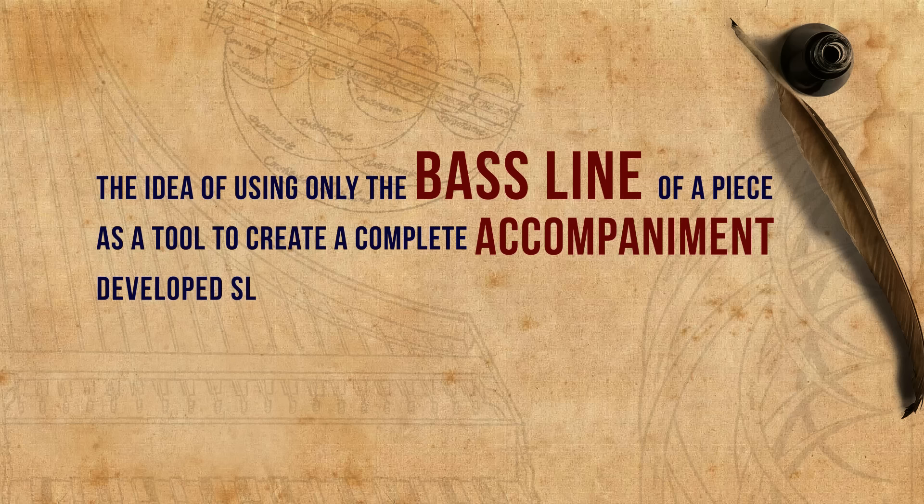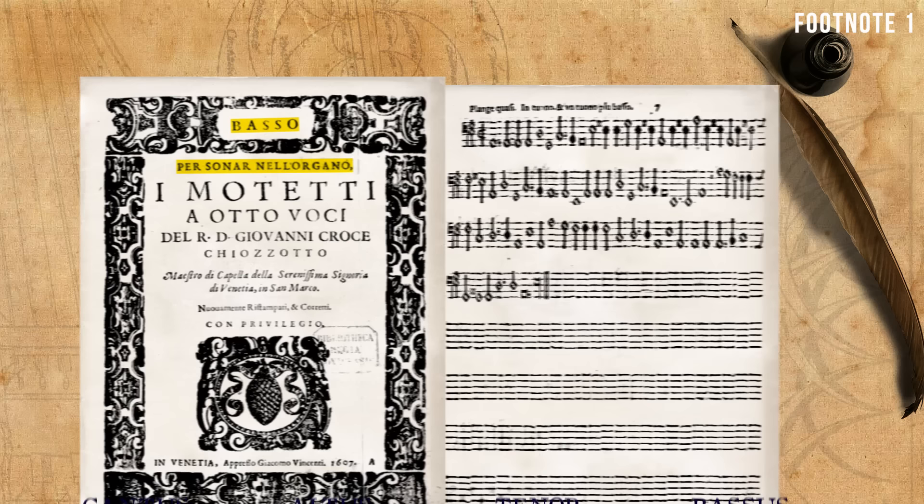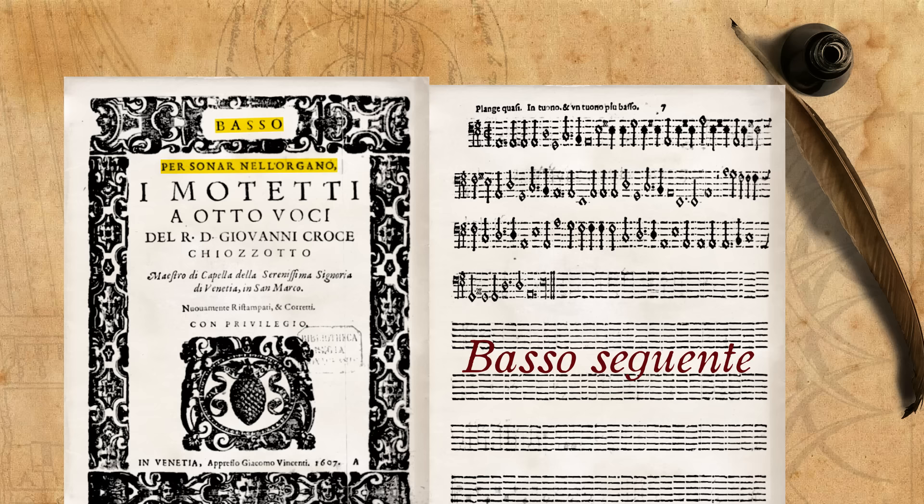The idea of using only the baseline of a piece as a tool to create a complete accompaniment developed slowly towards the end of the 16th century. Some music publications, apart from the regular vocal parts, also included an organ part. This part, called sometimes by the name basso seguente, included the lowest voice of the composition at every given moment.